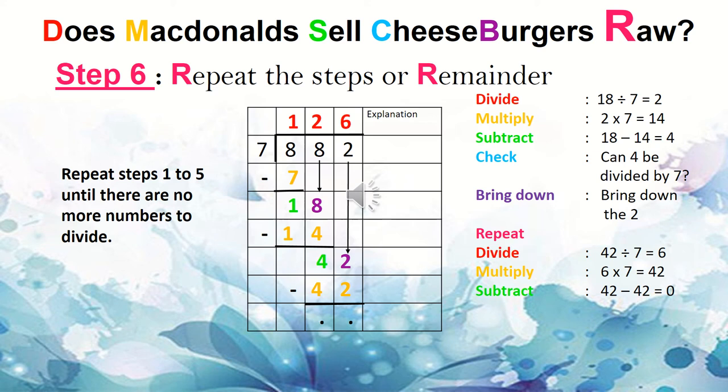I have to check according to step 4. Can 7 go into 4? No. So if I get a no, that means I must bring down the next number. And I bring down the 2. And it forms the number 42.